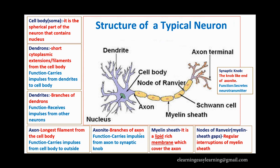We will see one by one what are the parts and functions of each part. A typical neuron has: a cell body, then dendron, dendrites, axon, axonite, myelin sheath, nodes of Ranvier, and synaptic knob. These are the main parts of a typical neuron.